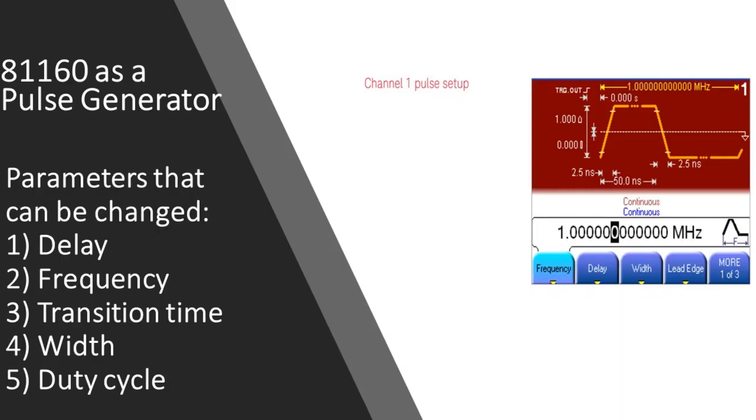The signal quality and trigger functionality provide everything needed for trigger or system clock applications. Timing parameters such as delay, frequency, transition time, width, and duty cycle can be changed without dropouts or glitches.